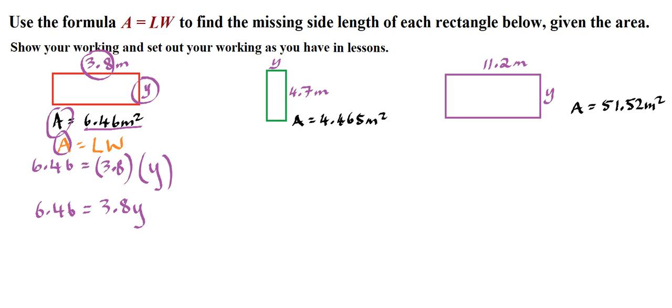The next line of working, we can now solve this for Y. We need to cancel out 3.8 times Y. So how do we cancel out multiplying by 3.8? We divide by 3.8. And we do the same to both sides. Multiplied by 3.8, divided by 3.8, that cancels each other out. And we're left with Y, which is what we want.